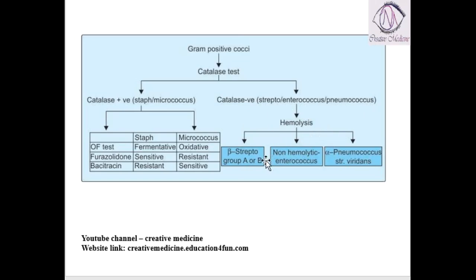Now, in the hemolysis, if it is streptococcus hemolysis, if it is beta hemolysis, then it can be streptococcus group A and group B. If it is alpha hemolysis, it can be pneumococcus or streptococcus viridans or if it is non-hemolytic, then it is enterococcus.